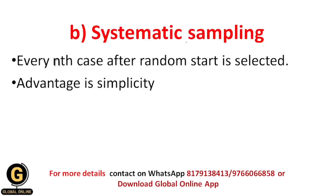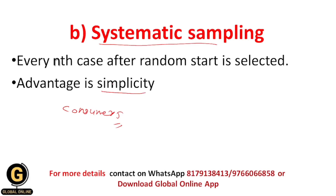The second type of probability sampling is systematic sampling, where every nth case after a random start is selected. For example, if doing a survey on consumers and choosing every fifth consumer from your sample, that is systematic sampling. The advantage of this technique is its simplicity.